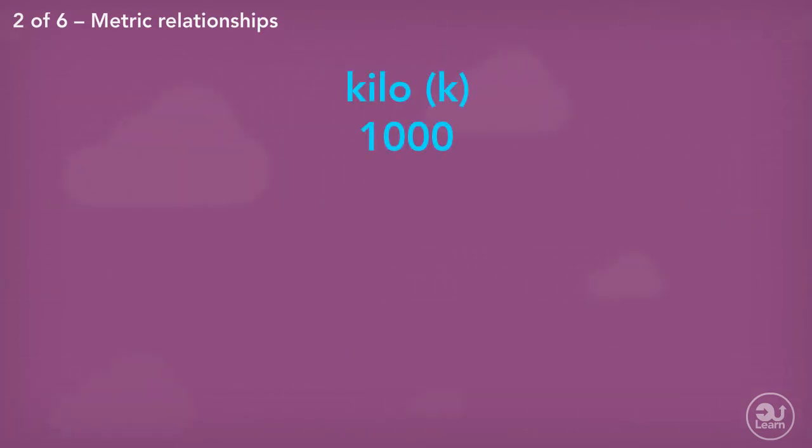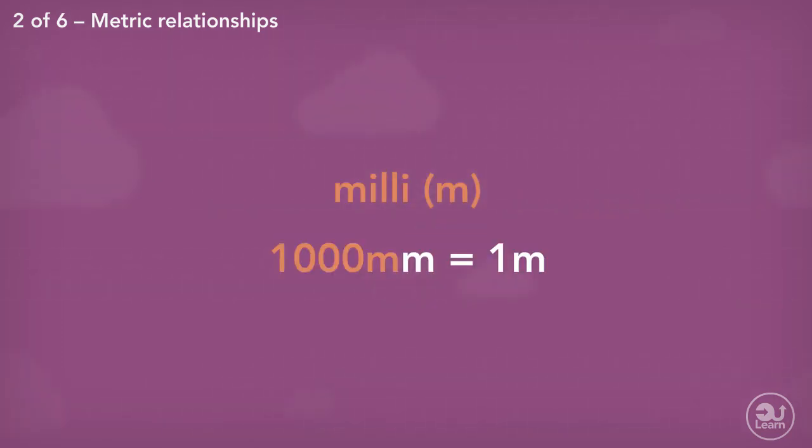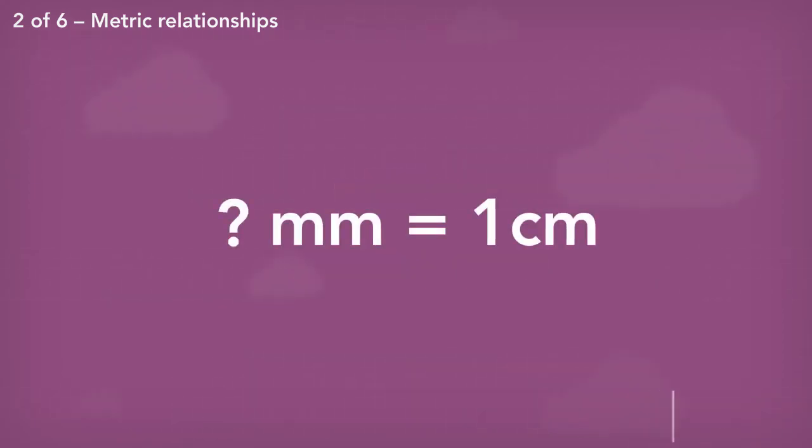Similarly, kilo is linked to 1,000. So a kilometer is equal to 1,000 meters. How about milli? 1,000 millimeters is equal to 1 meter. How many millimeters are equal to a centimeter? 10 millimeters is equal to 1 centimeter.